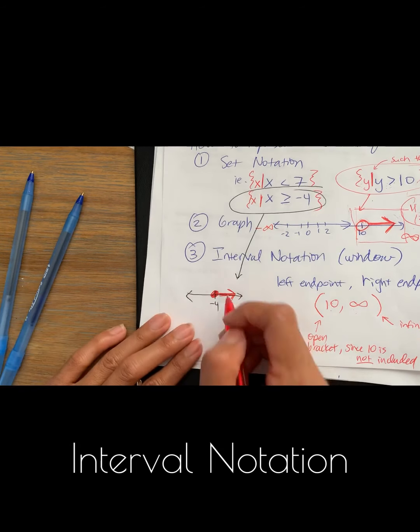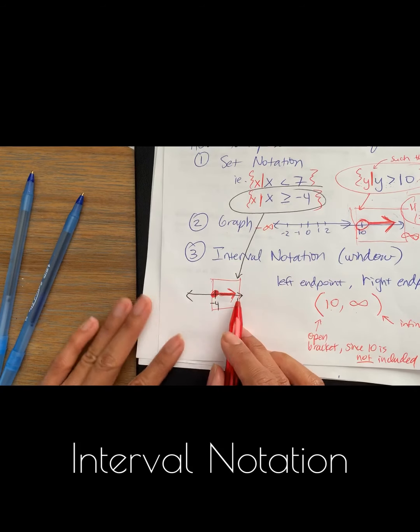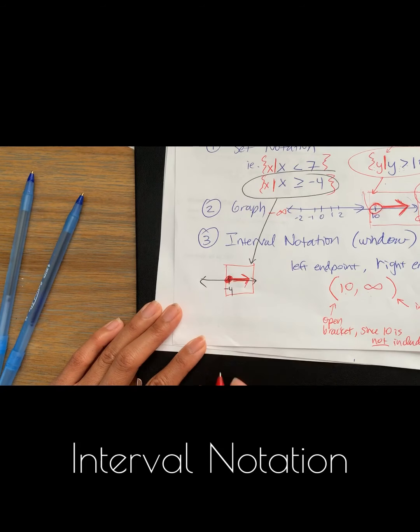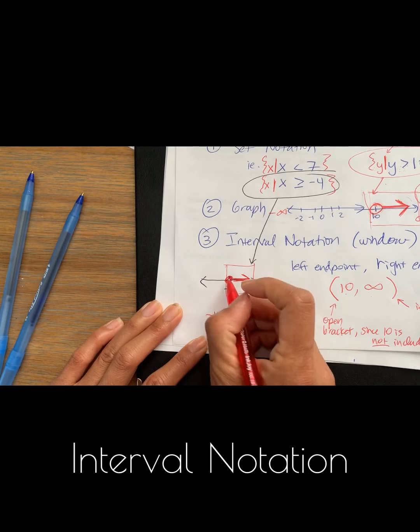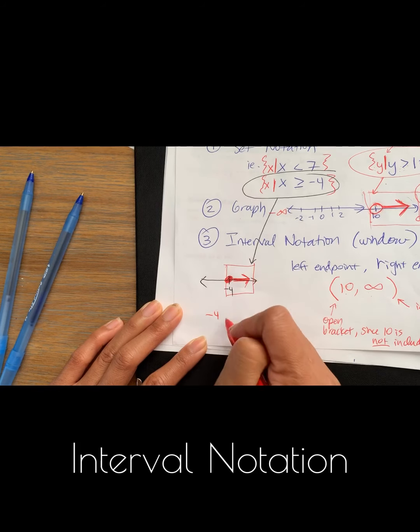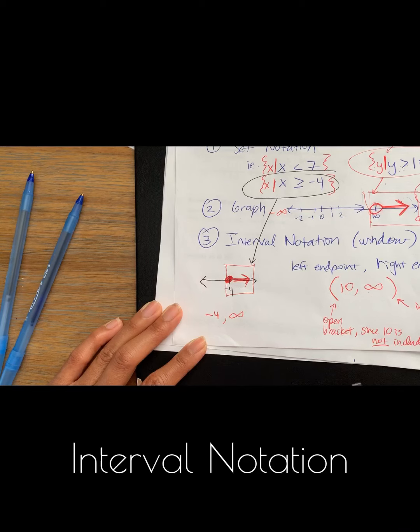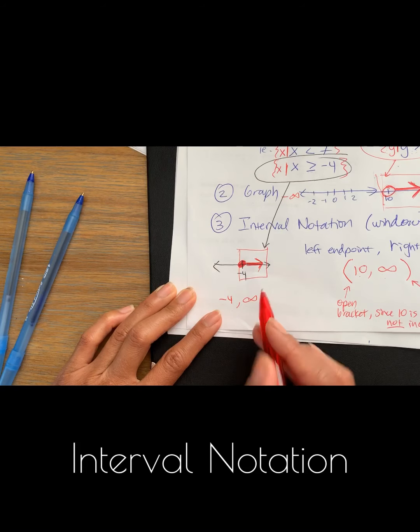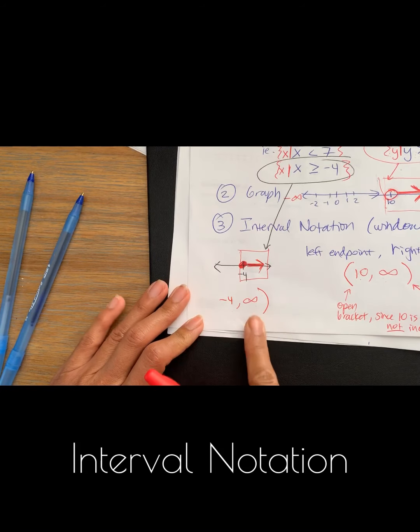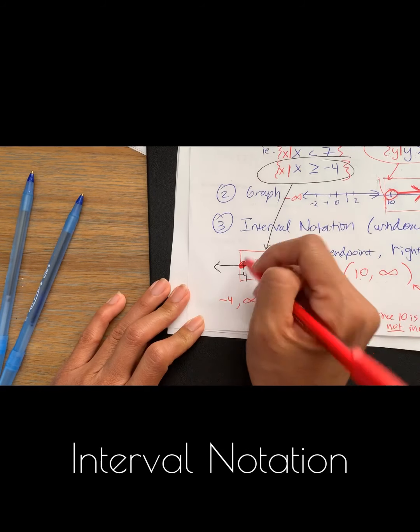So if I wanted to write this in interval notation, I would write the left-hand endpoint, which is negative 4, and the right-hand endpoint, which is infinity. And then I ask myself, do I have open or closed brackets? So infinity always has an open bracket, or open parentheses. Negative 4, notice that this is a solid circle, or solid dot.